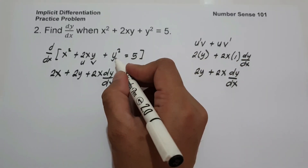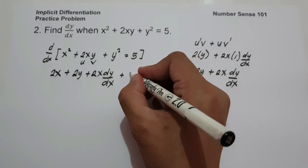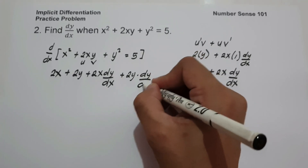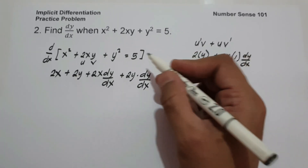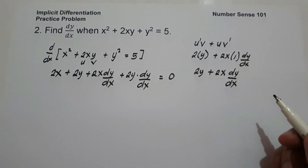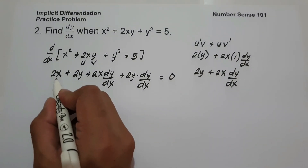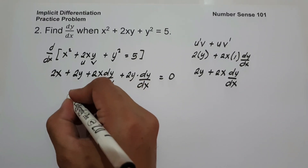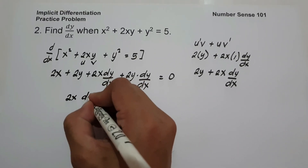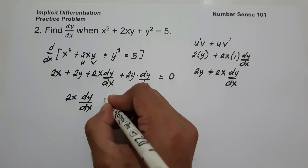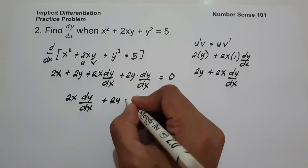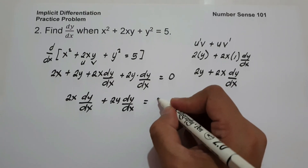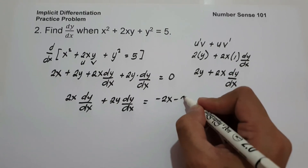Then, the derivative of y squared is 2y dy over dx, and the derivative of 5 is 0. Let us move 2x and 2y to the other side. It will give us 2x dy over dx plus 2y dy over dx equals negative 2x minus 2y.